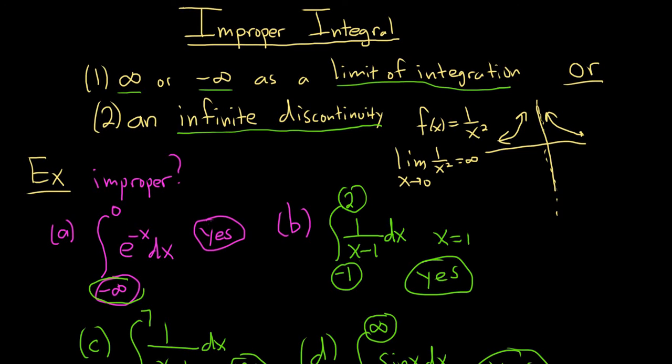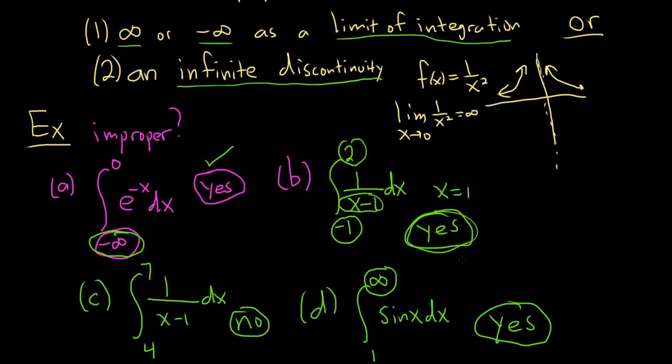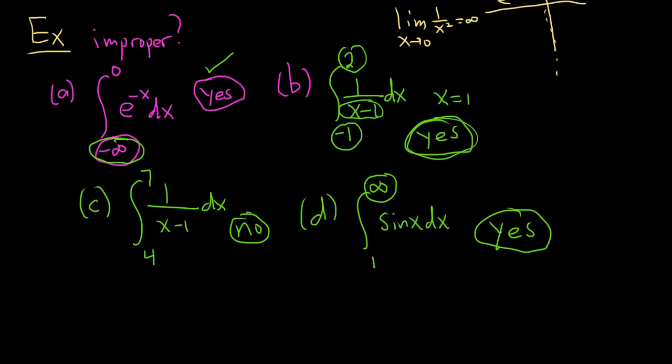In this first case here, we had an infinite limit, so it's yes. This is not continuous at 1, and 1 is between these numbers, so it's yes. This one was no, and that's because, sure, it's not continuous at 1, but 1 is not between the 4 and the 7, so life is good between 4 and 7, so it's not improper. And this one was yes because we had an infinity. I hope this video has been helpful.